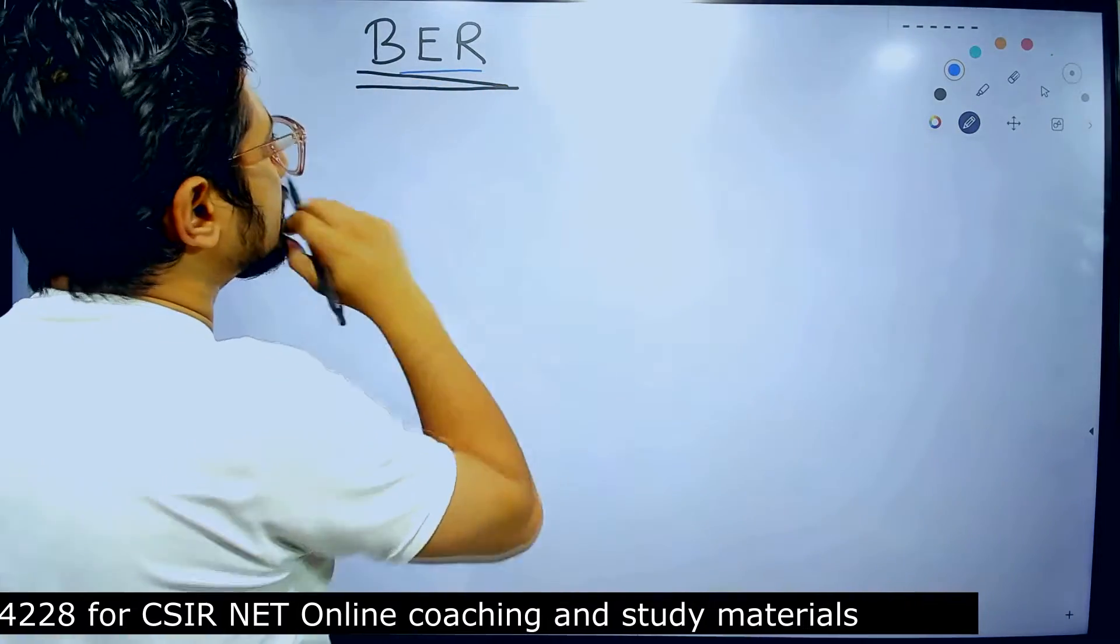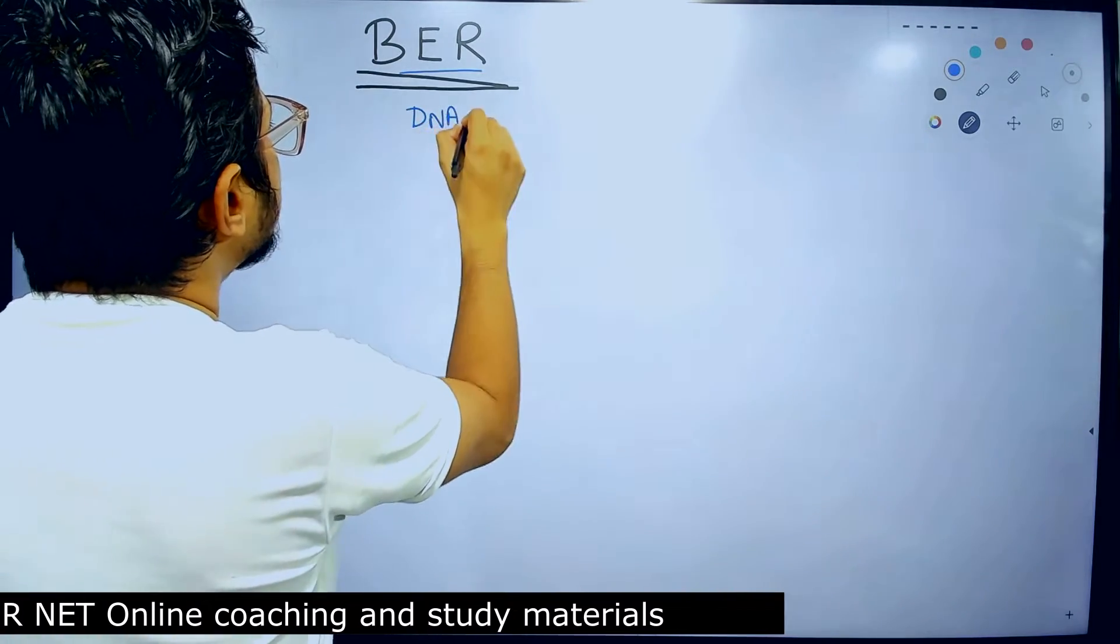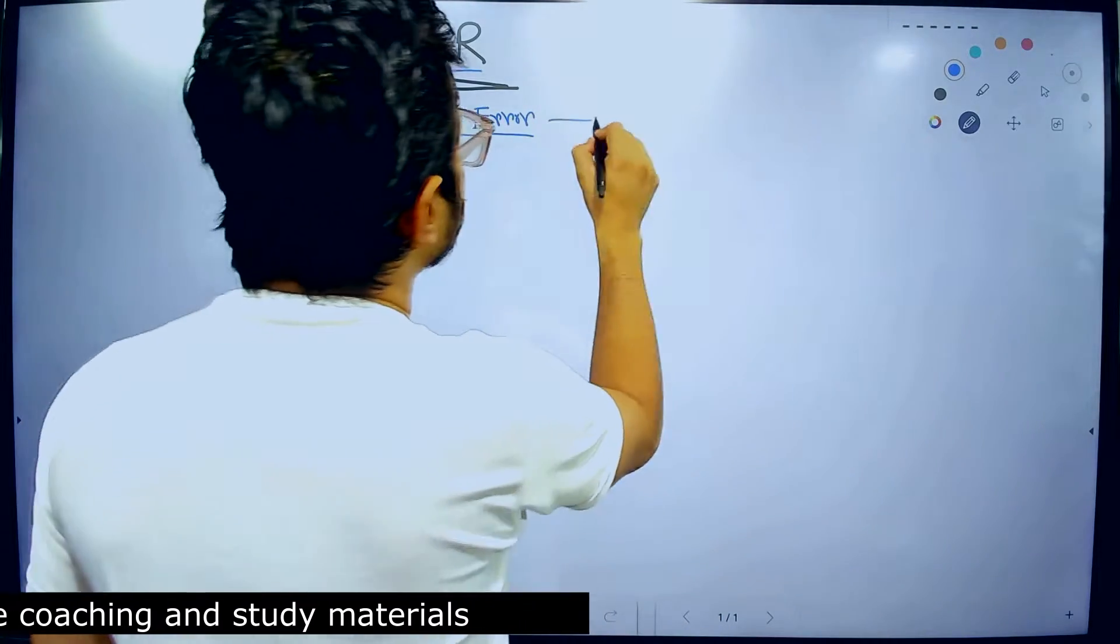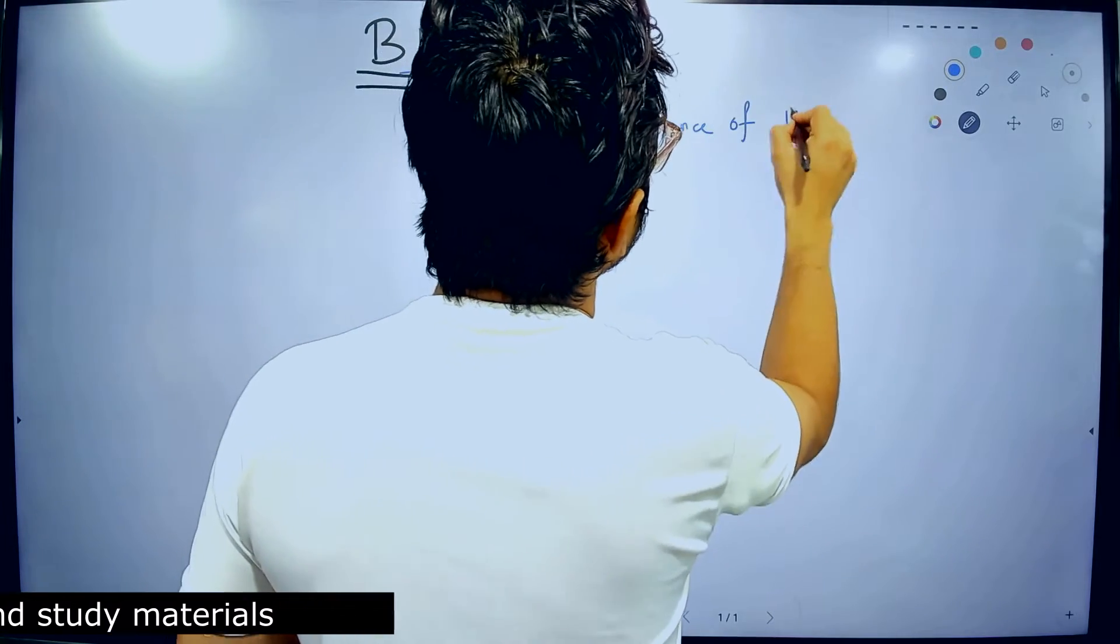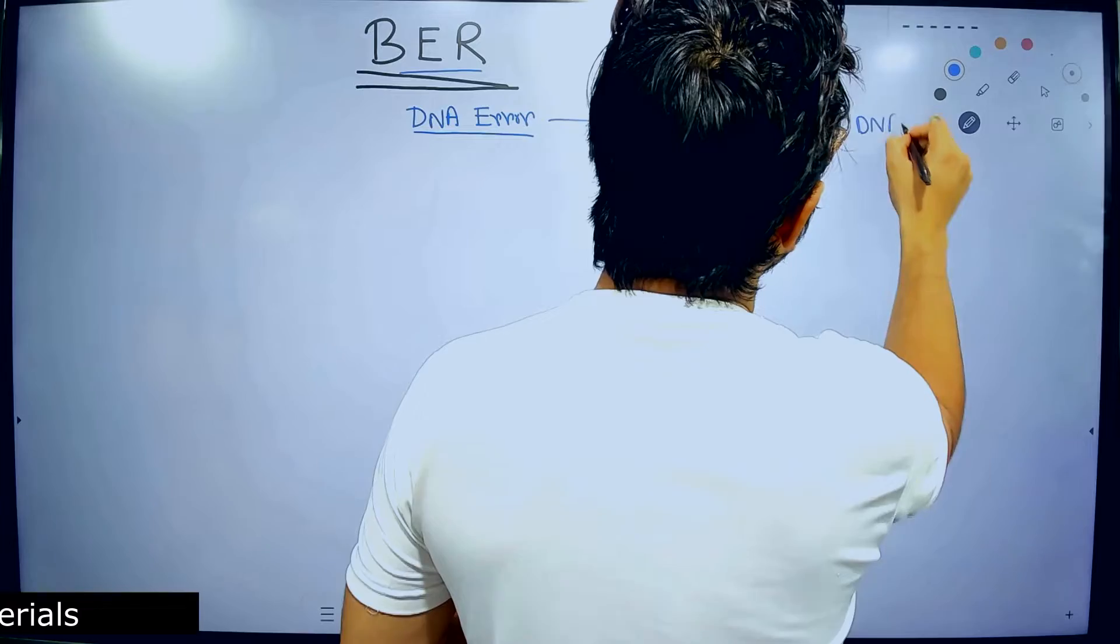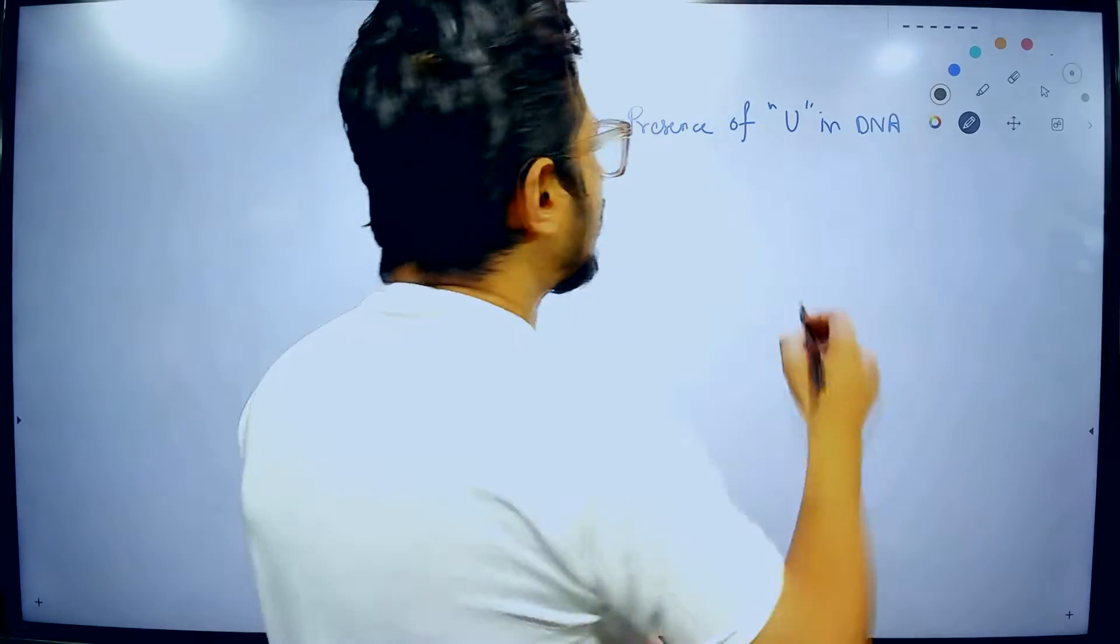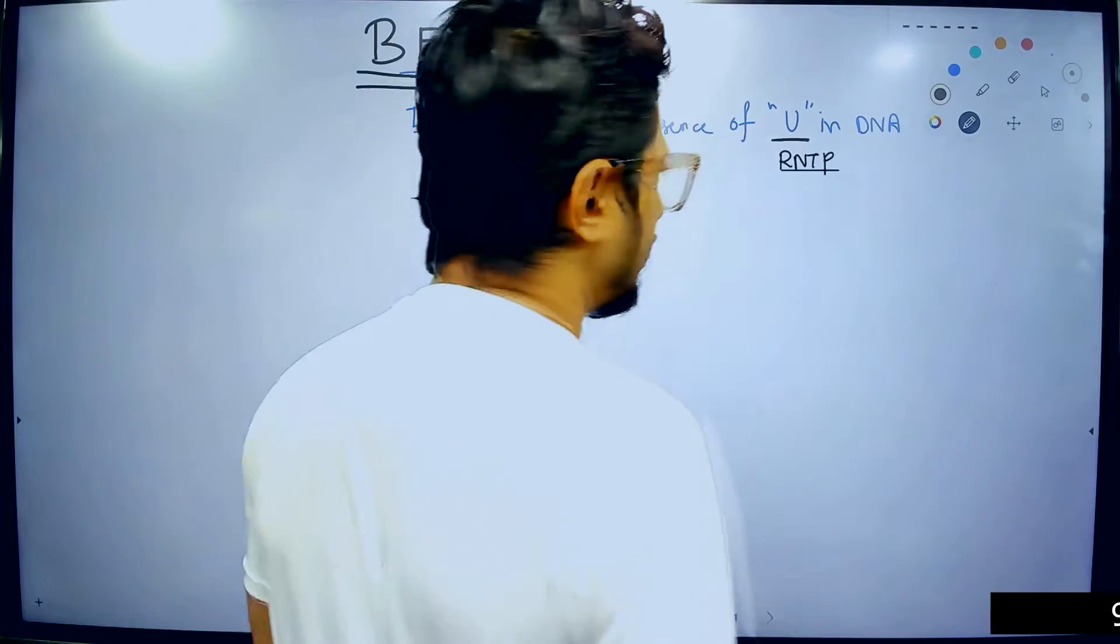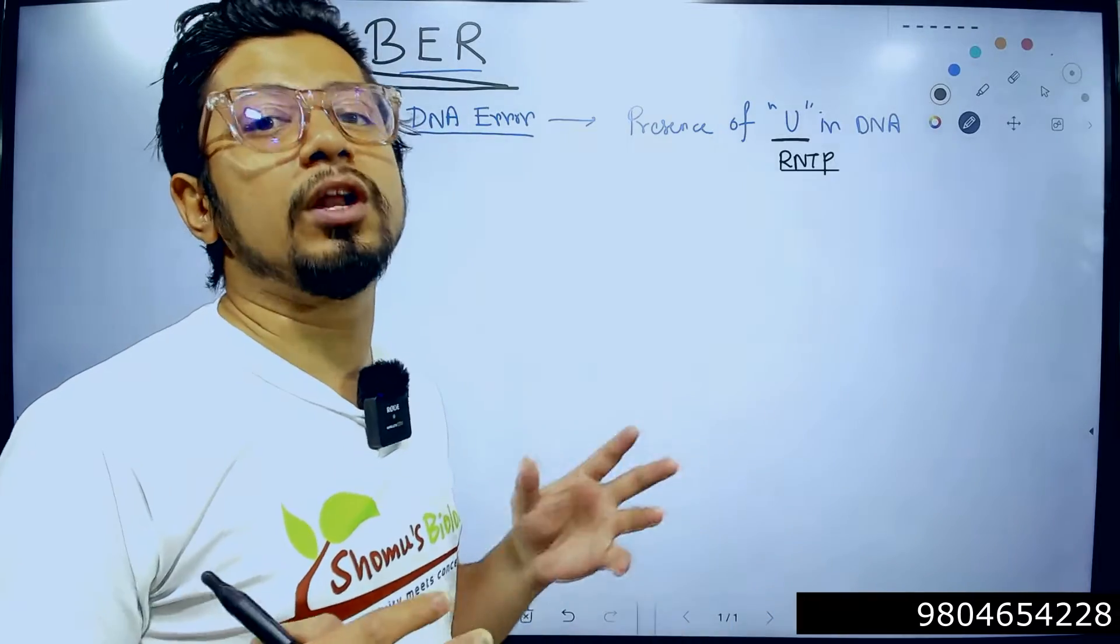Base excision repair is a mechanism of DNA repair when there is a DNA error. The DNA error we are trying to fix here is the presence of uracil in DNA. That is counted as an error because DNA is supposed to carry deoxyribonucleic acid. U or uracil is a ribonucleic acid or RNTP, not DRNTP.